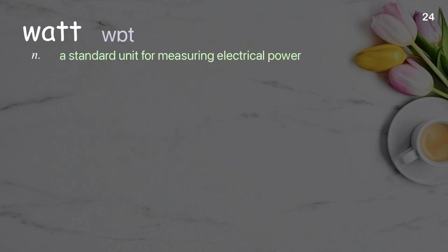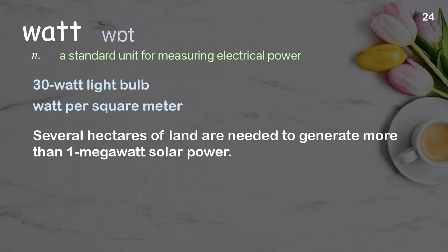Watt: a standard unit for measuring electrical power. Examples: 30 watt light bulb, watt per square meter. Several hectares of land are needed to generate more than one megawatt of solar power.